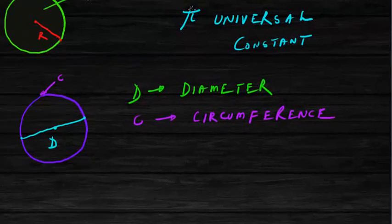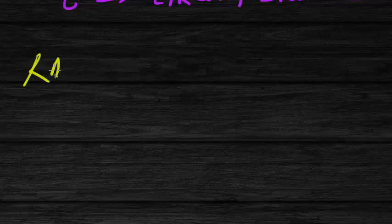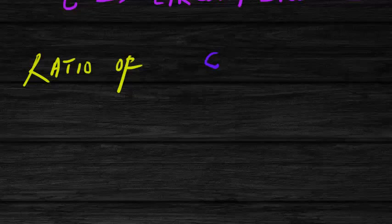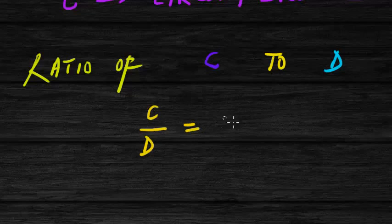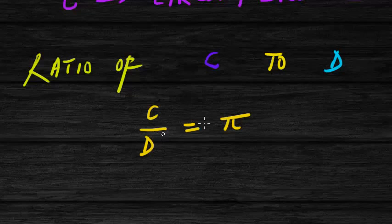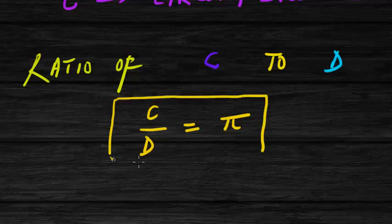Now that we know what the circumference and diameter of the circle are, let us look into pi. In any given circle, the ratio of the circumference to its diameter — that is c/d — is constant and equal to pi, no matter what circle you take in the whole universe. Any circle of any size: the ratio of circumference to diameter turns out to be pi. That is the definition of pi: pi is the ratio of the circumference of a circle to its diameter.